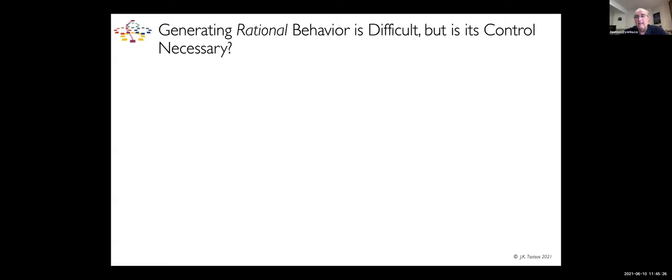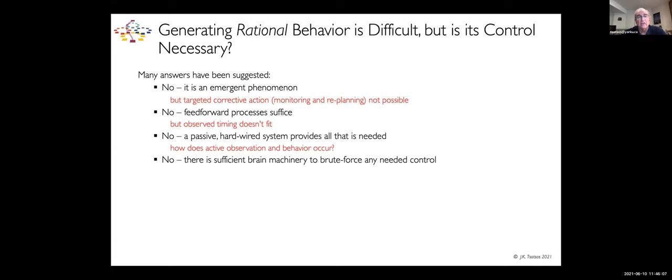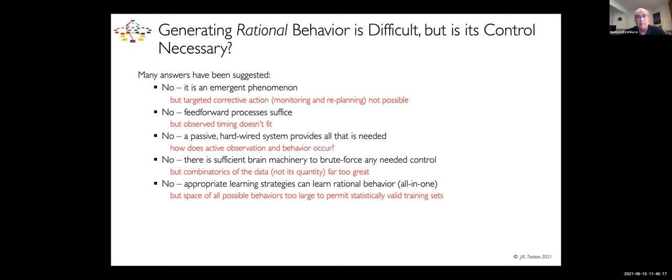So rational behavior is difficult to generate, but is its control necessary? Many answers have been suggested. One answer is no, because it emerges, but then how can you have corrective action? Feed-forward processes suffice, but the timing is different. Passive architecture is all that's needed, but then how do you do active observation? Appropriate learning strategies can learn rational behavior, but the space of all possible behaviors is too large. So the answer is yes, because if you eliminate the impossible, whatever remains, however improbable, must be the truth.